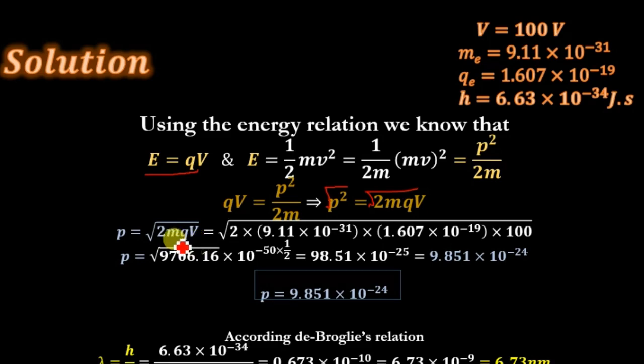Putting the values for m, q, and V in this equation, we get the value of momentum as 9.851 × 10^-24. The value of m_e = 9.11 × 10^-31, V = 100 volts, and charge on electron q_e = 1.607 × 10^-19.